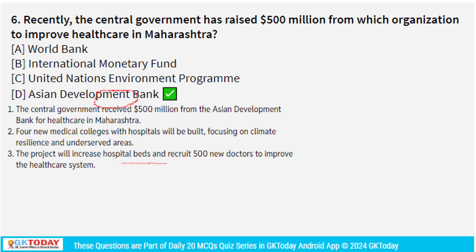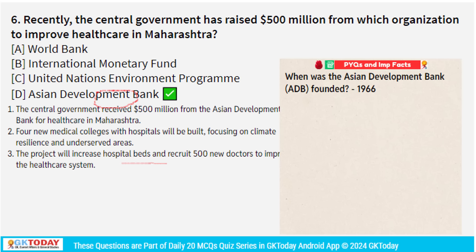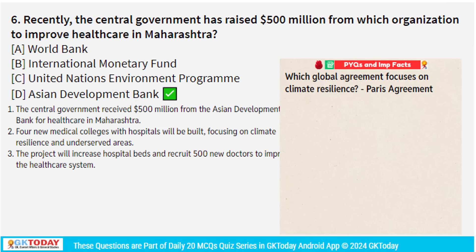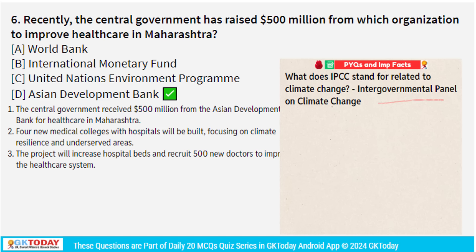The Asian Development Bank was founded in 1966 and its headquarters is in the Philippines. The Paris Agreement focuses on climate resilience, because our environment is continuously changing due to global warming. The IPCC — Intergovernmental Panel on Climate Change — is also important in this context.